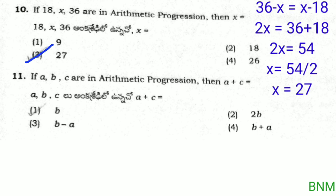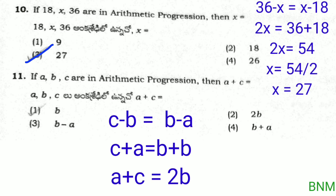Next bit: if 18, x, 36 are in arithmetic progression, then x equals? In an arithmetic progression, the common difference is equal. So 36 minus x equals x minus 18. Rearranging: 2x equals 36 plus 18, so 2x equals 54, and x equals 27. The right answer is the third option.